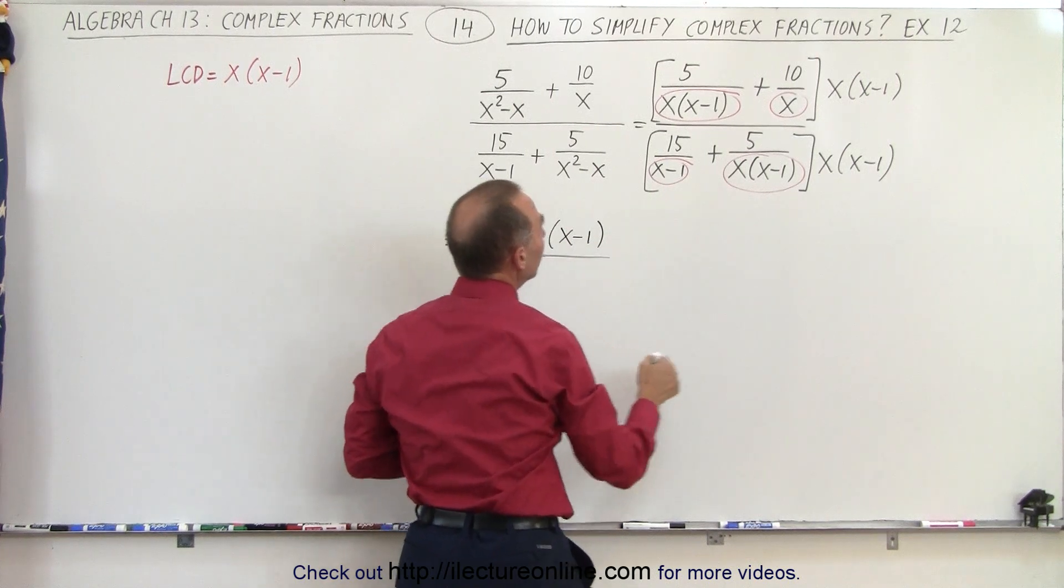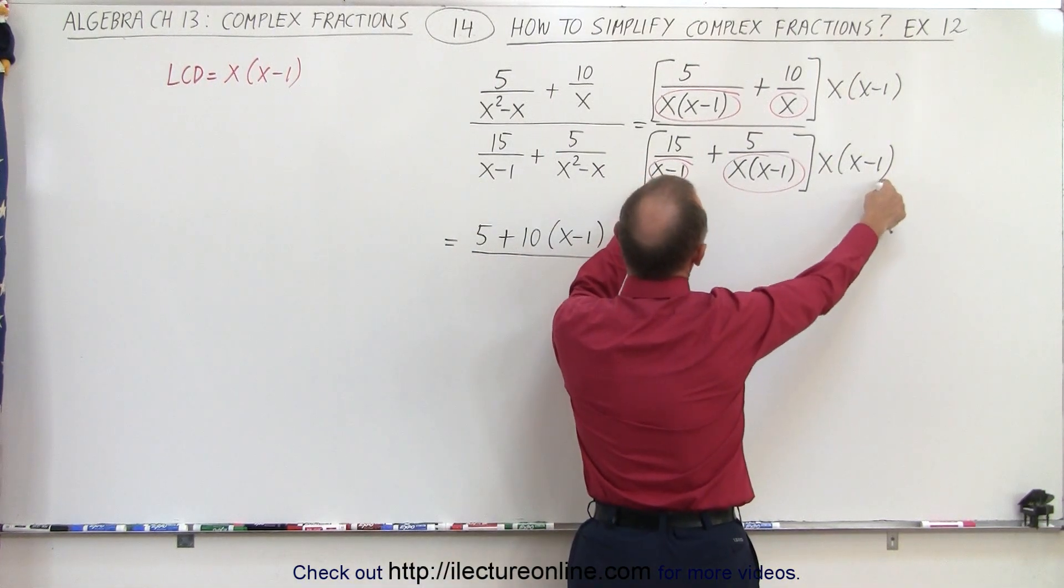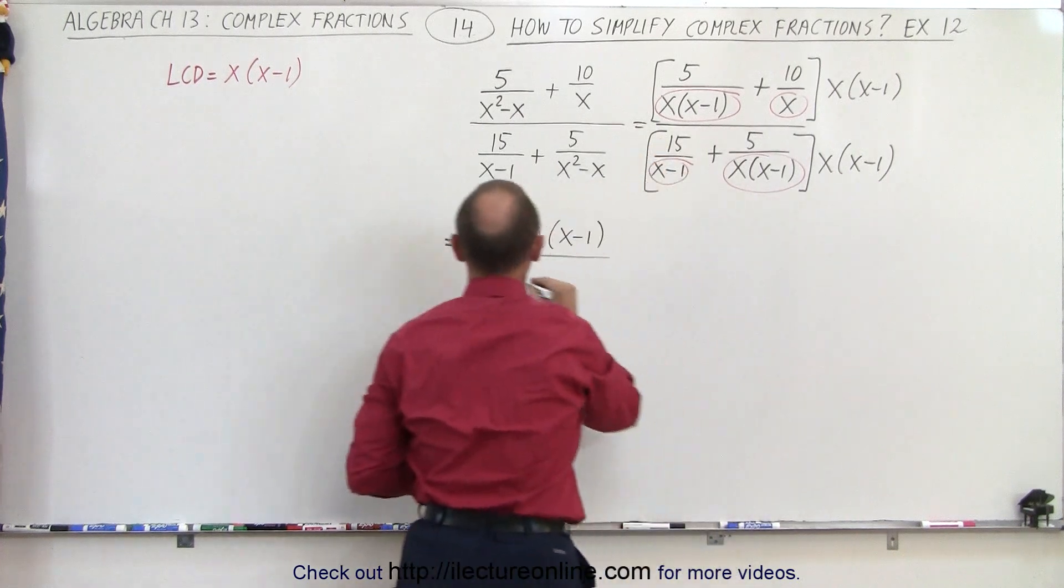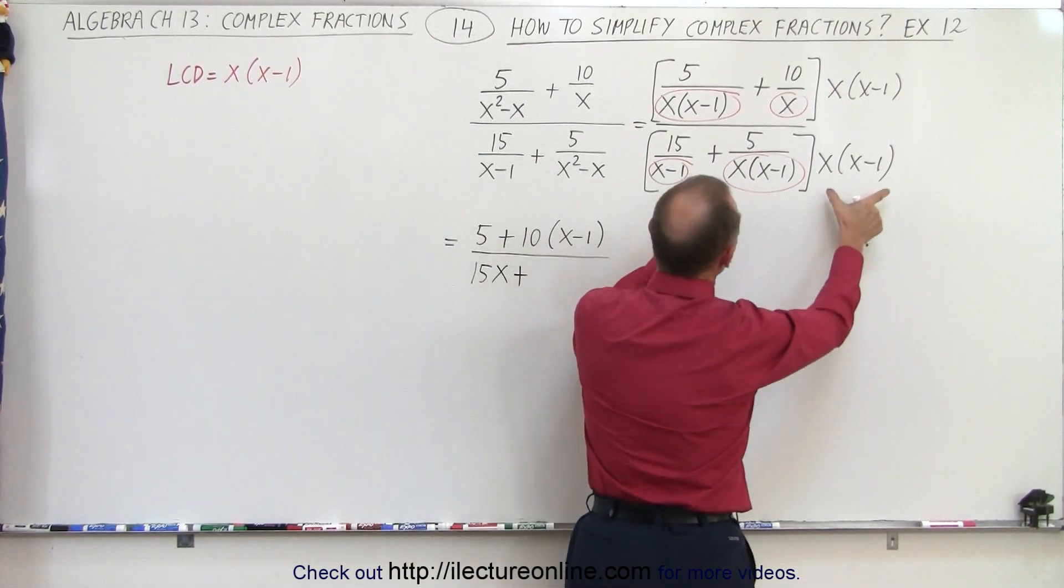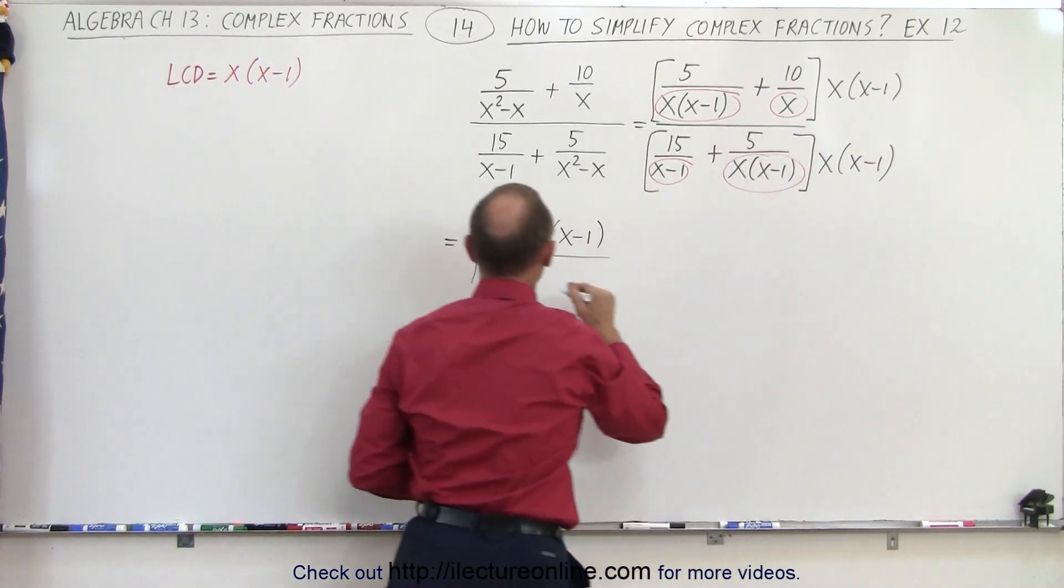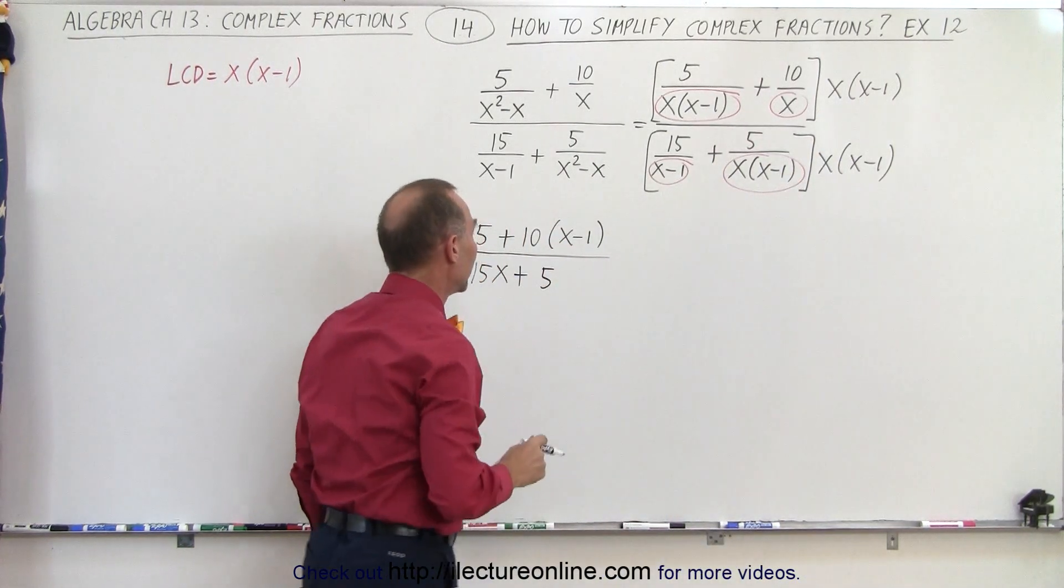In the denominator, when we multiply these two together, the x minus 1 cancel, and we're left with 15 times x. And on here, notice that both the x and the x minus 1 cancel, and you're simply left with a plus 5.